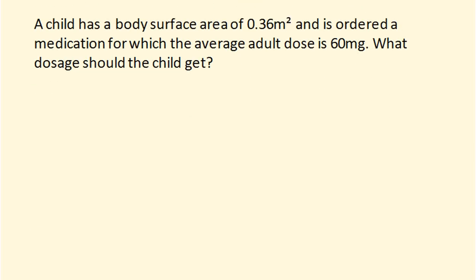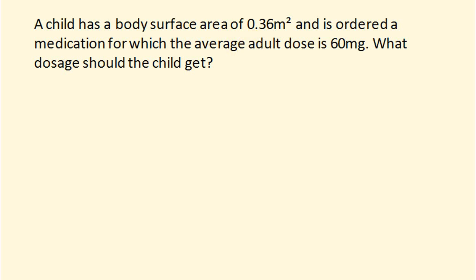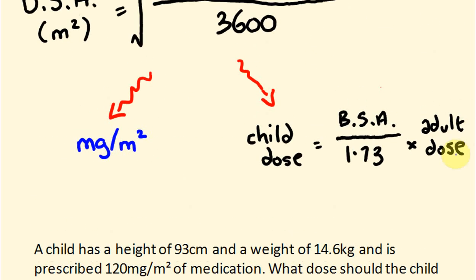Now for the second example: a child has a body surface area of 0.36 metres squared and is ordered a medication for which the average adult dose is 60 milligrams. What dosage should the child get? Since the body surface area is already given, we're going to use the adult dose formula: child dose equals the body surface area divided by 1.73, multiplied by the adult dose.